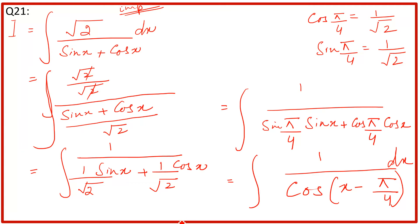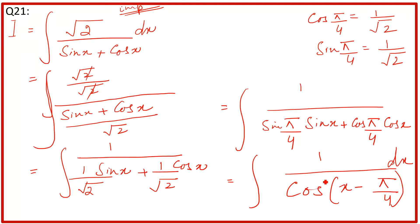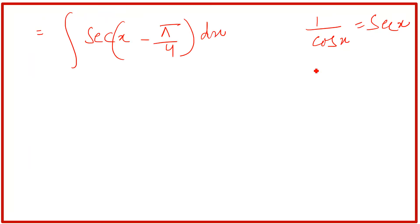This is cos x. Now what is 1 divided by cos? 1 divided by cos x equals sec x. So I can write sec(x - π/4).